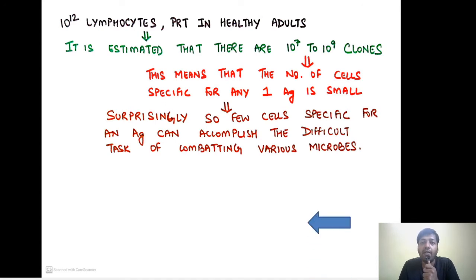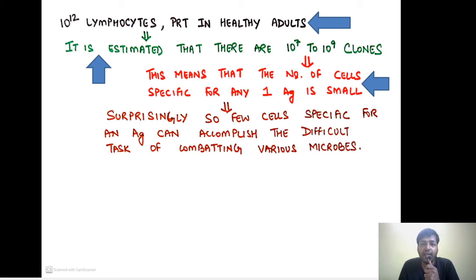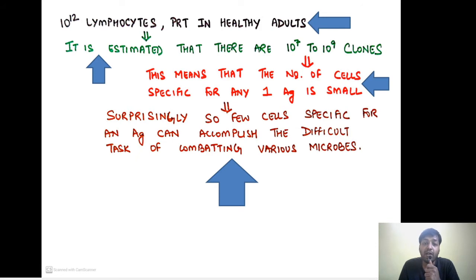There are 10¹² lymphocytes in a healthy adult, estimated to form 10⁷ to 10⁹ clones. This means the number of lymphocytes specific for any one particular antigen is very small. Remarkably, even these small groups of antigen-specific lymphocytes can accomplish the difficult task of combating various microbes, making our immune system quite efficient.